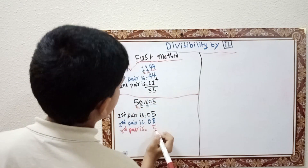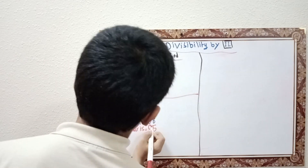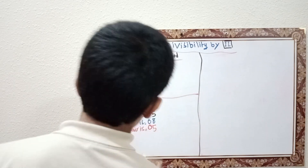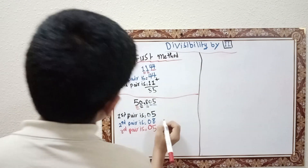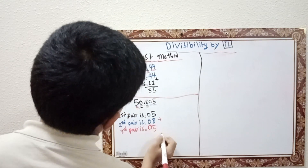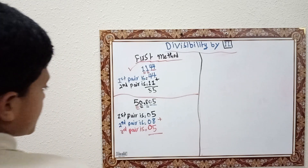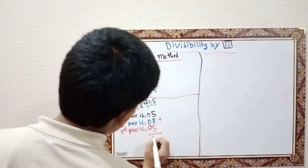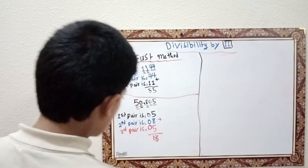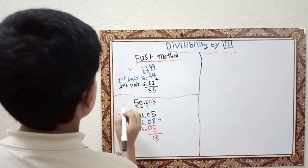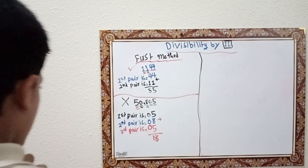Now we'll do the summation: 5 plus 5 equals 10, plus 8 equals 18. Can 18 be divisible by 11? No. So this number cannot be divisible by 11.